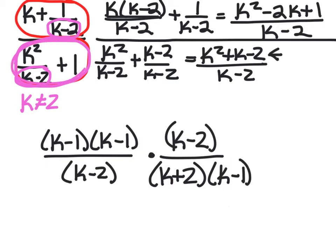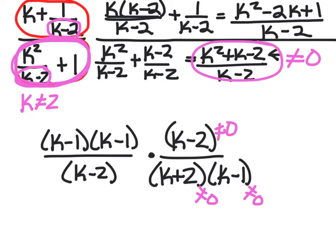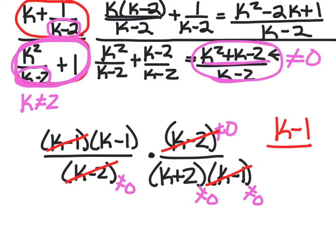Remember, none of the factors can be 0 — no denominator can be 0 and no factor in the numerator used as a denominator can be 0. So we can cross out a set of k minus 1s and a set of k minus 2s, and the final answer is k minus 1 over k plus 2.